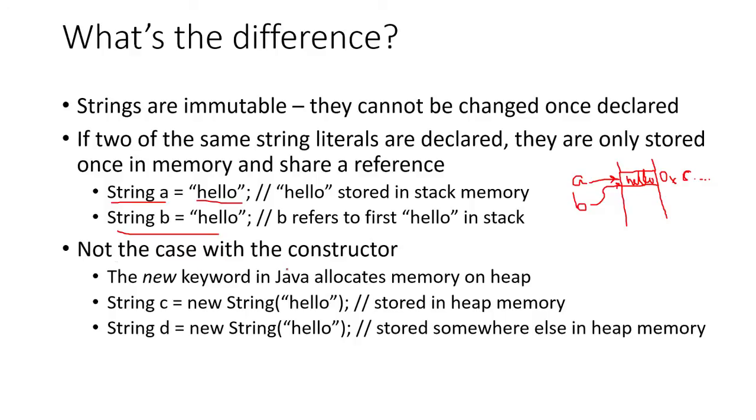This is not the case, however, when you use the constructor. Remember, the constructor is when you use the new keyword. The new keyword in Java allocates memory on the heap, not the stack. So in this case, string C is equal to new String('hello'), and then we have string D equal to new String('hello'). They're going to be stored in separate places in the heap, meaning that these two references are going to be different. They're going to have different memory addresses associated with them.